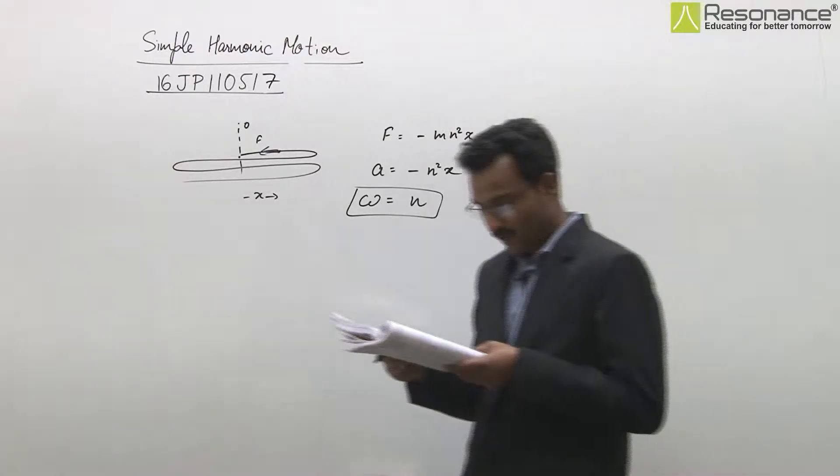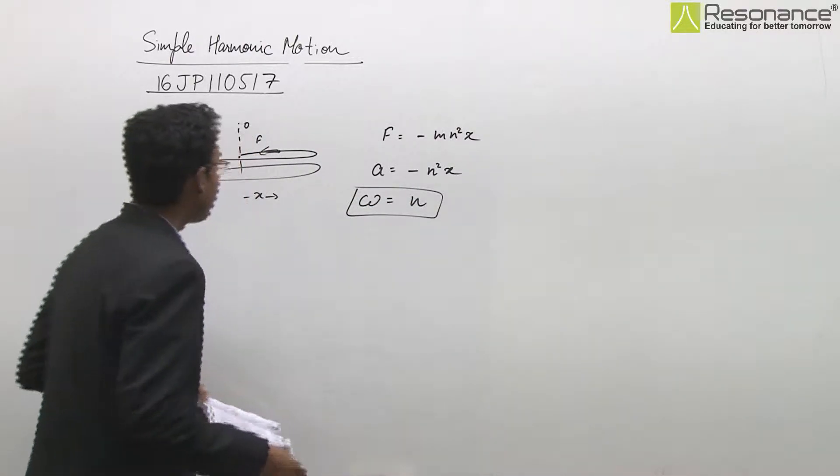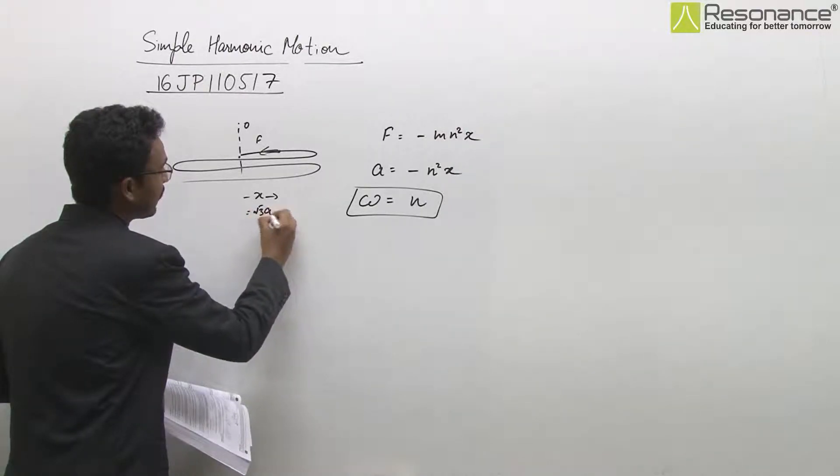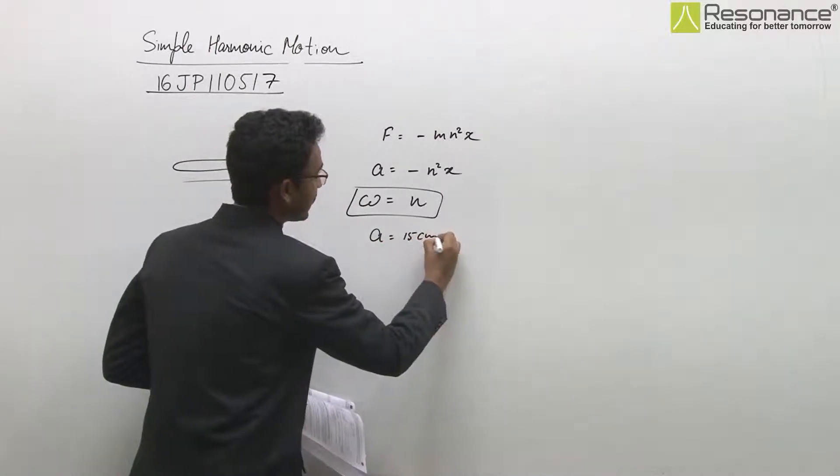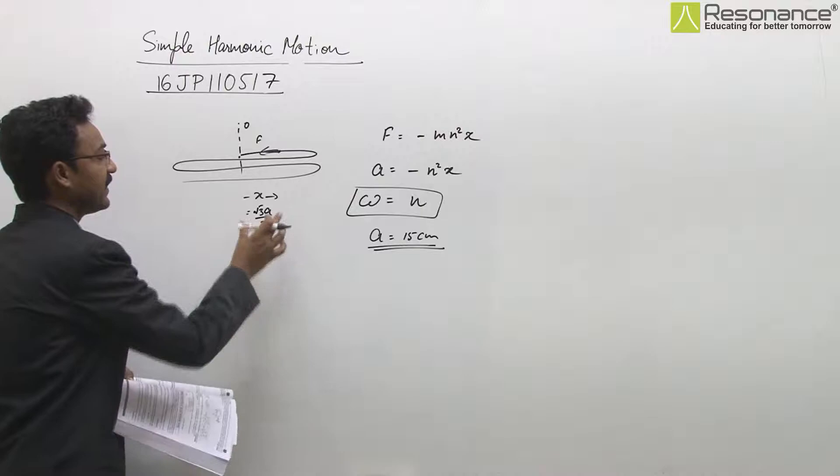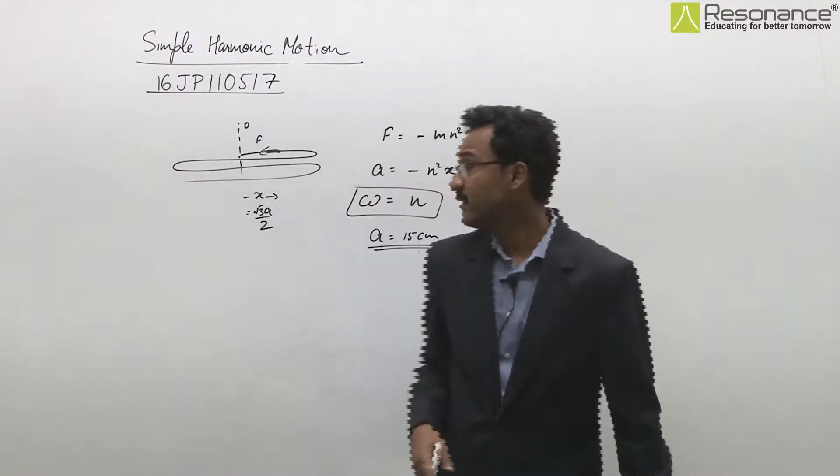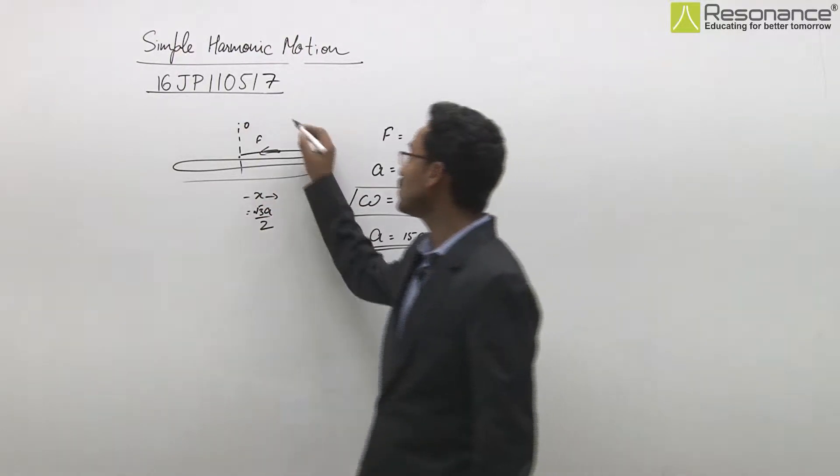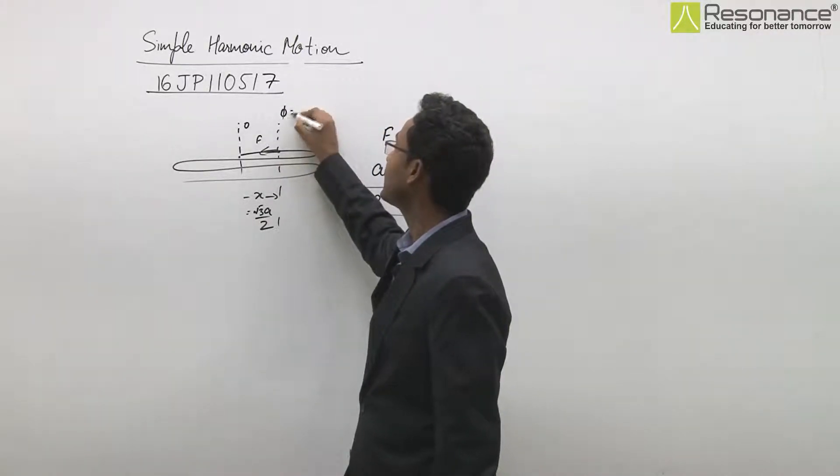Given that amplitude of SHM is 15 centimeter, and when the particle is at x = √3a/2 where amplitude a = 15 cm, at this position the particle is hit. If we look at this position, we can determine the particle's phase is 60 degrees, phase value is π/3.